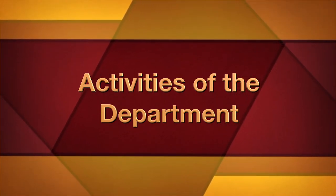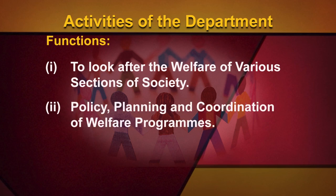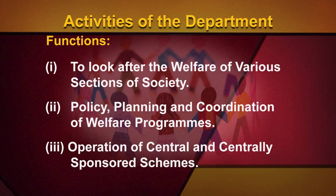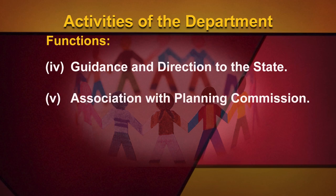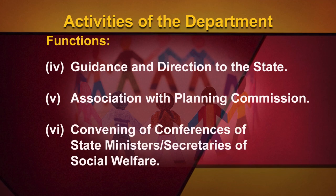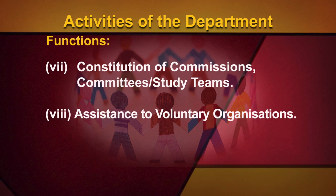Activities of the Department: The Social Welfare Department has been allocated a multitude of subjects and accordingly undertakes multifarious and multidimensional functions confined to the welfare of various sections of society. These functions include: 1. Looking after the welfare of various sections of society, 2. Policy, planning and coordination of welfare programs, 3. Operation of central and centrally sponsored schemes, 4. Guidance and direction to the state, 5. Association with the Planning Commission, 6. Convening of conferences of state ministers and secretaries of social welfare, 7. Constitution of commissions, committees and study teams, 8. Assistance to voluntary organizations.